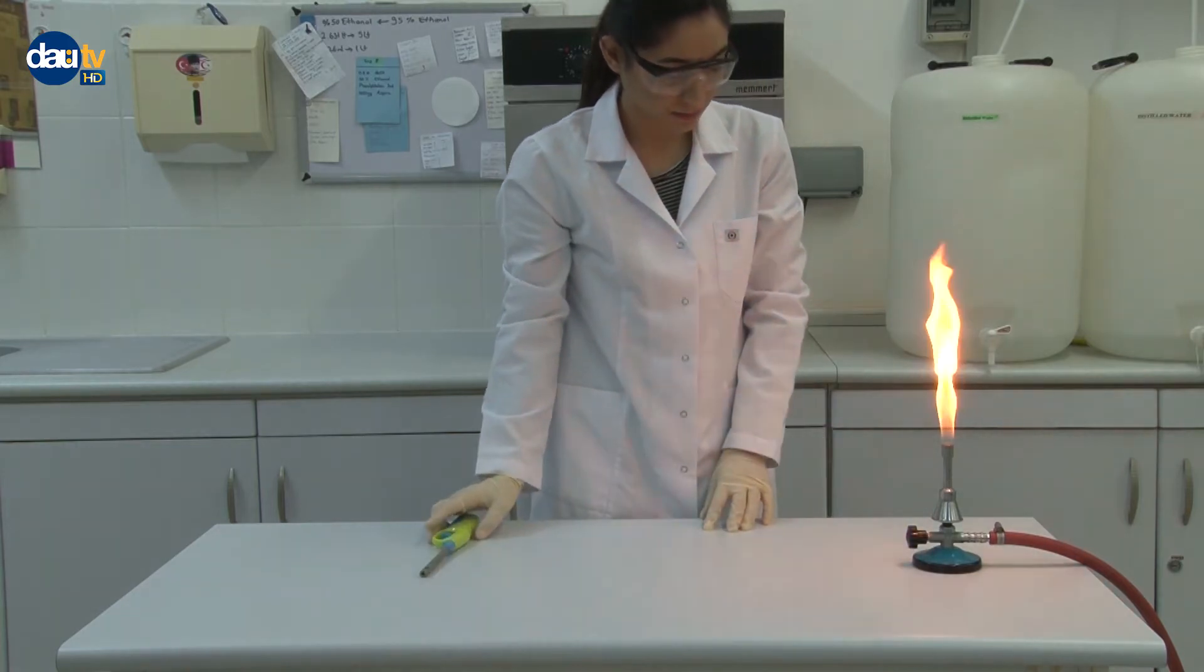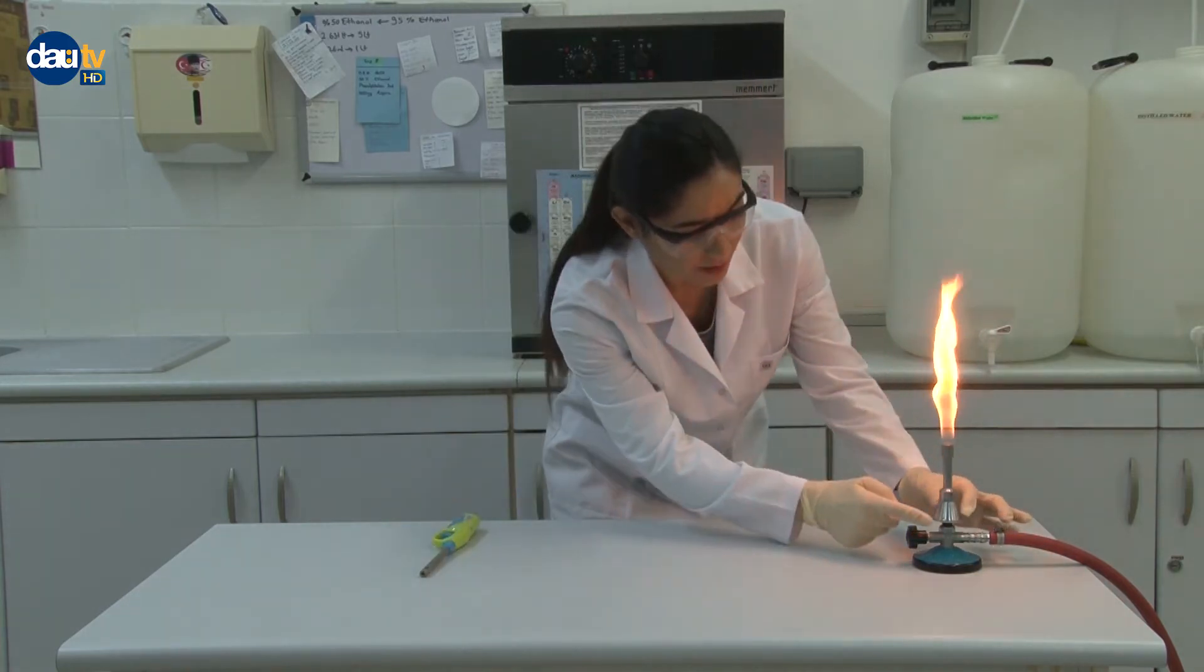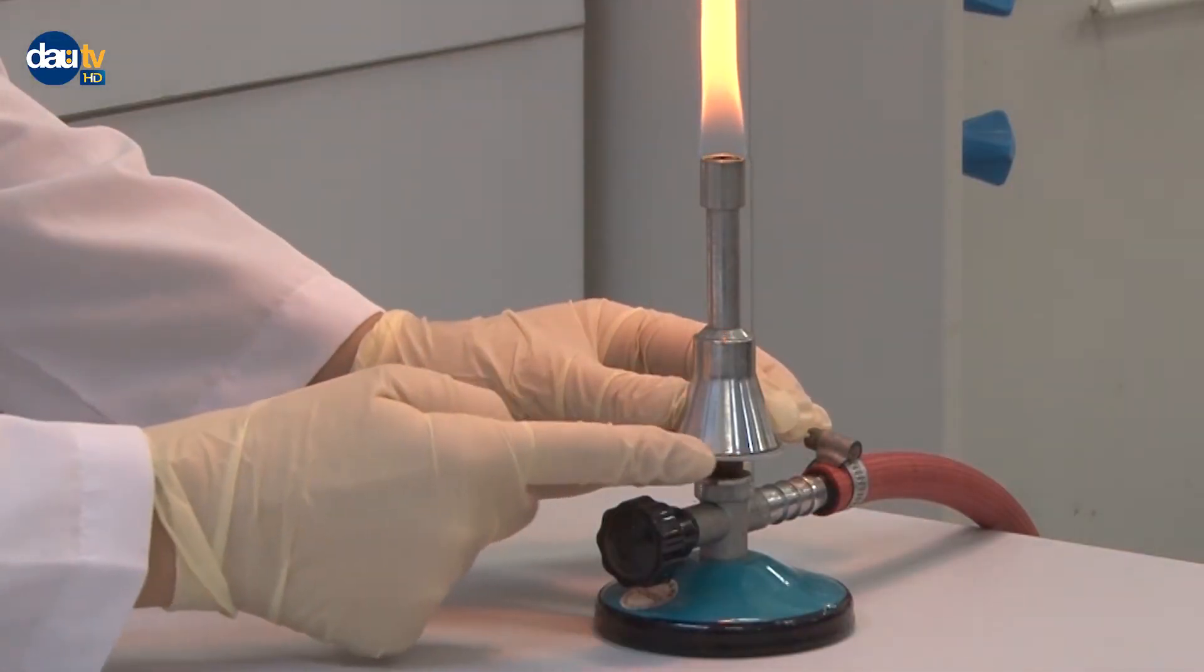Supply by opening the valve on the side of the burner where rubber tubing is attached. Notice that gas burns with a yellow flame.